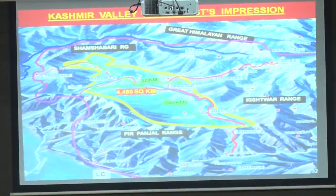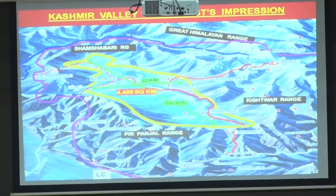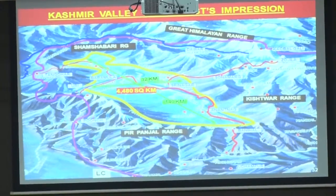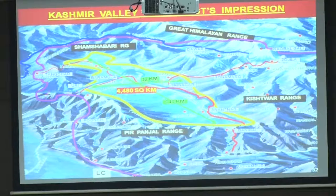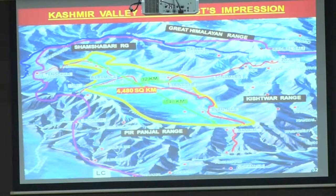Those of you who don't know what the valley is — what Kashmir is — may not have visited, or may have visited many years ago. Just an idea: this is a very famous photograph and painting by Sarabjit Singh, the famous photographer and painter from Chandigarh. This is what the Kashmir Valley is. This is the Shamshbari range. What you find in purple is the Line of Control. This is the Shamshbari range in the north, and this is the Pirpanjal.